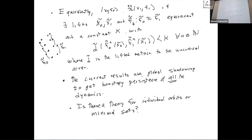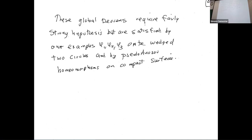Global shadowing relates any pair of orbits from any two homotopic maps. To get these nice global persistence results, we need expansion and essentialness that allows periodic orbits to persist, but we also have to jack that up to get all orbits persisting. For that, we need periodic orbits to be dense. That additional hypothesis is still satisfied by our examples: pseudo-Anosovs, linear Anosovs, et cetera.